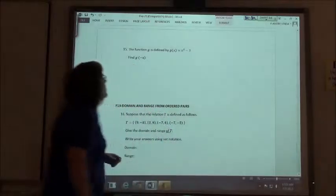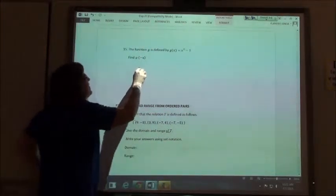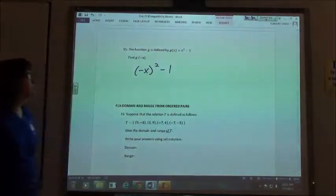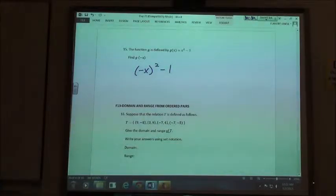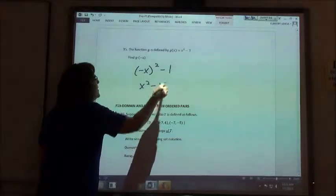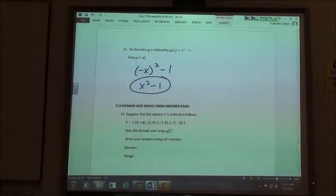Number 15, they want you to put a negative x in for the x. So I'm going to have a negative x squared minus 1. And when I square my negative x, I get x squared. So I just get x squared minus 1. I can't do anything else to simplify that. That's just going to be my answer.